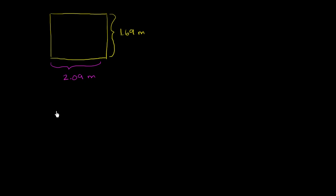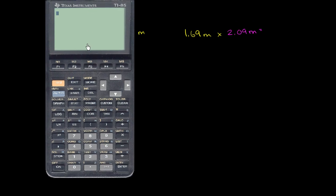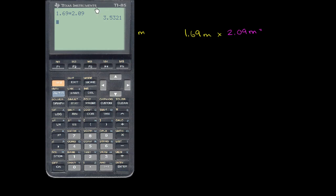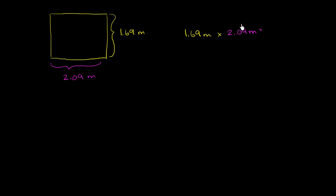And you were to ask me, what is the area of your carpet? I'd just do the straightforward calculation: area equals length times width, so 1.69 meters times 2.09 meters. Let me get the calculator out — 1.69 times 2.09 gives us 3.5321. So this gives us 3.5321 meters squared. And so I might very proudly tell you the area is 3.5321 square meters.